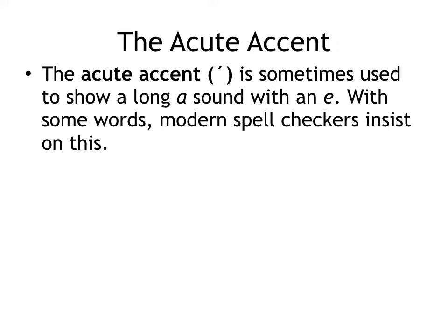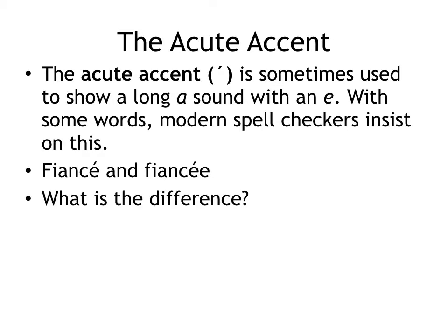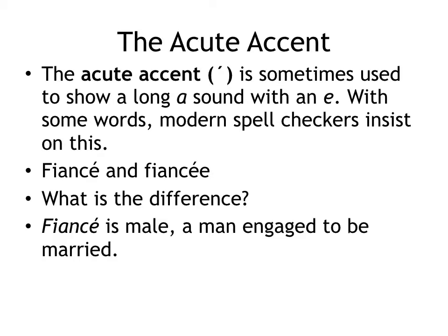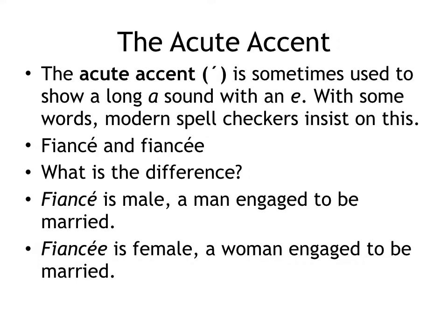The acute accent is sometimes used to show a long A sound with an E, and with some words, modern spell checkers will insist on it. A lot of word processors, if you were to type fiancé, would automatically add that acute accent. It shows us that it's not pronounced 'fiance' but fiancé. These two words in English are pronounced the same but spelled differently. Fiancé, without the second E, is male — a man engaged to be married — and fiancée, with the two E's, is female — a woman engaged to be married.